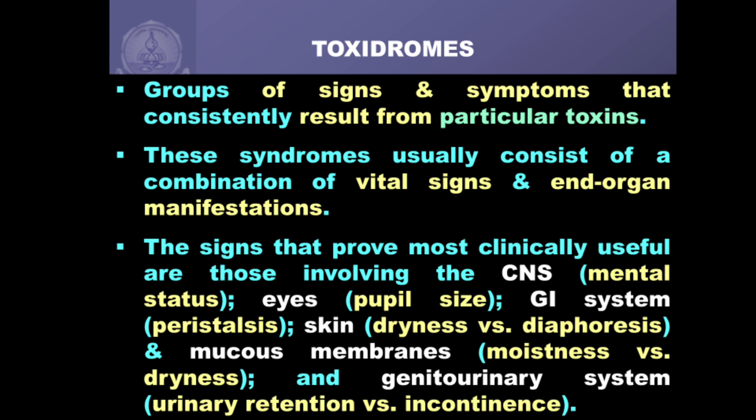When we talk of toxidromic approach, naturally we have to know what is meant by toxidrome. Toxidrome is a combined word where you have a syndrome commonly seen in clinical medicine combined with a toxicological scenario, so you call it toxidrome. Toxidromes are quite common in clinical practice as compared to syndromes which are said to be uncommon — that is important to understand. A toxidrome is nothing but a group of signs and symptoms that consistently results from particular toxins.